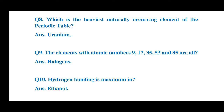Check the APSC Inspector of Legal Metrology playlist for related videos. Question 9: The elements with atomic numbers 9, 17, 35, 53, and 85 are called? The answer is halogens.